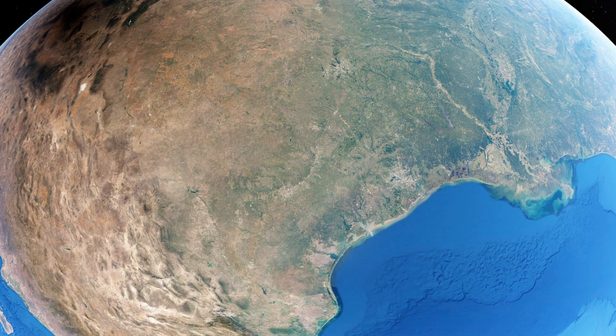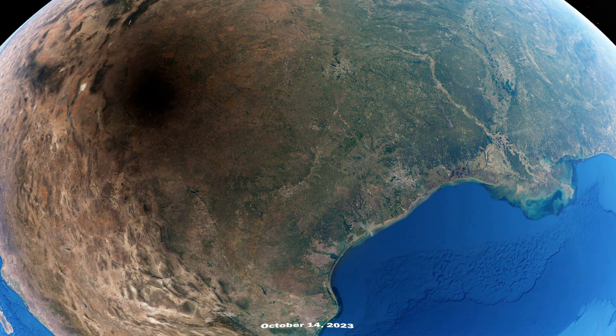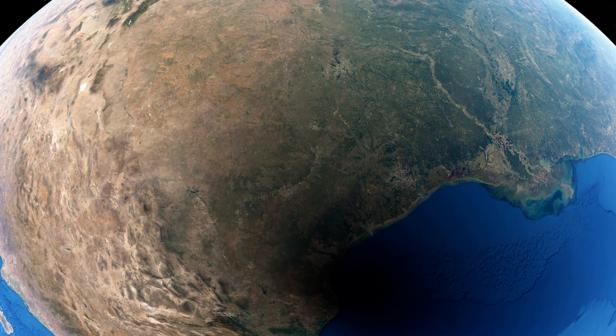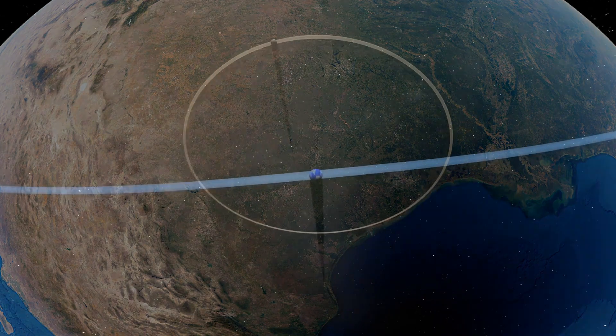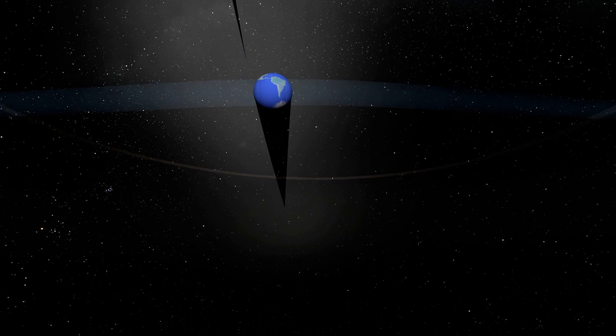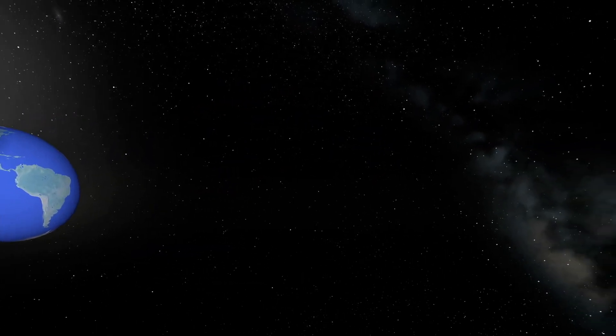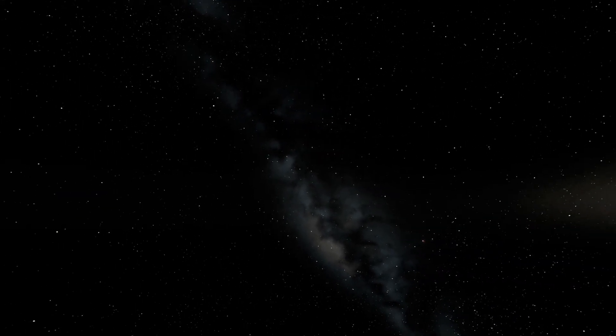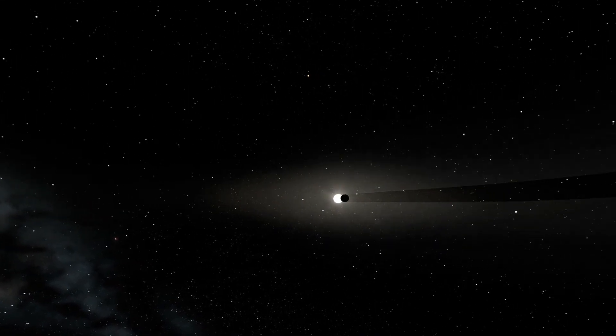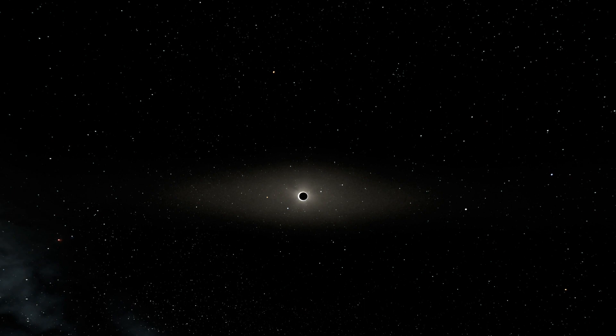The October 14, 2023 Annular Solar Eclipse path extends from west to east, across the U.S., and onto Central and South America. The alignment of the sun, moon, and Earth are the same for annular and total solar eclipses. But the moon's size in the sky does change. It depends on the moon's distance from Earth. When the moon is farthest from Earth, it is too small in the sky to cover the sun. It leaves a ring, or annulus, of sunlight at the midpoint of the eclipse.